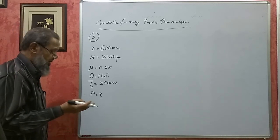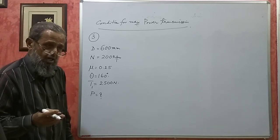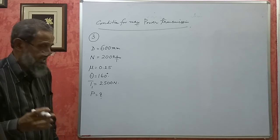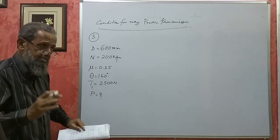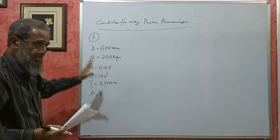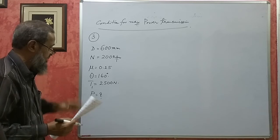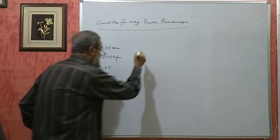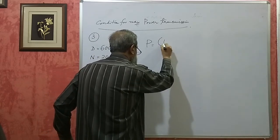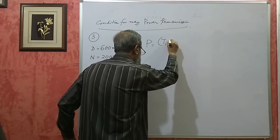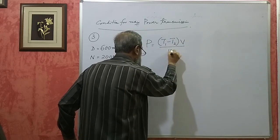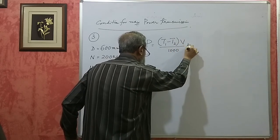They have not given the mass or density of the belt, so we need not consider centrifugal tension. The formula for power neglecting centrifugal tension is P = (T1 − T2) × V / 1000, giving power in kilowatts.